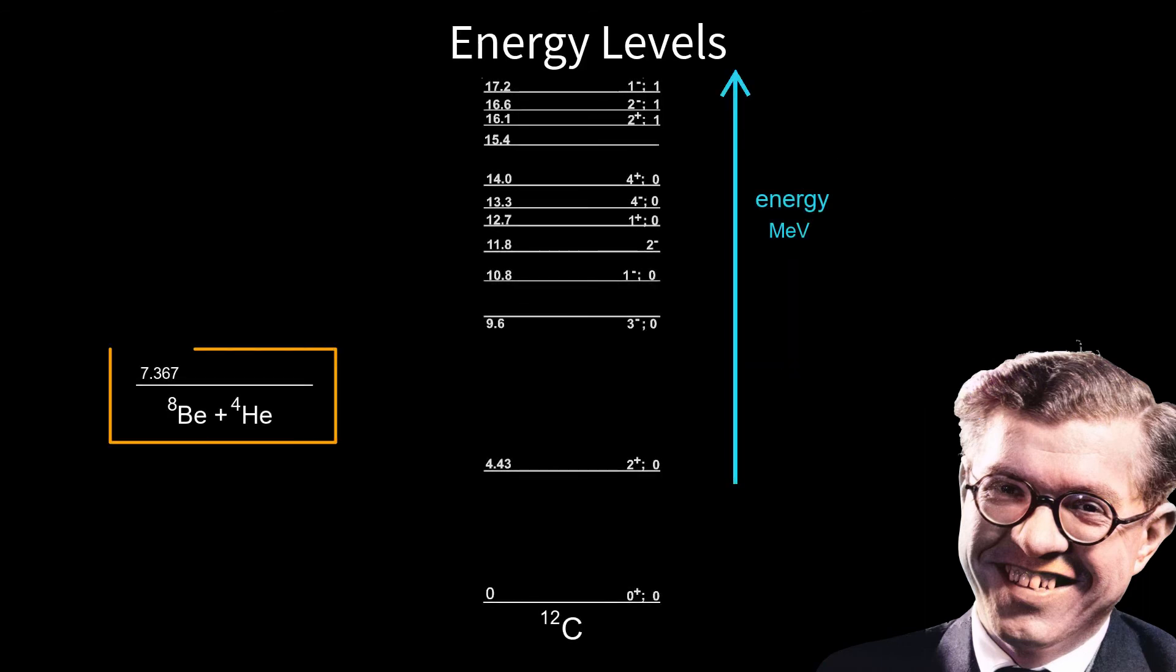Hoyle compared the mass energy levels of a beryllium plus a helium nucleus and a carbon-12 nucleus. He calculated that if carbon had an available energy level at about 7.7 million electron volts above its ground state, then there would be a resonance with beryllium and helium. Carbon production would get a huge boost. The boost was necessary because without it there would be no carbon to make physicists to study the problem.